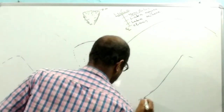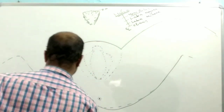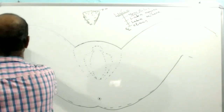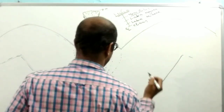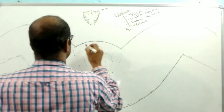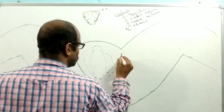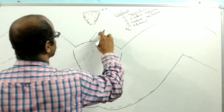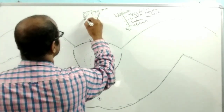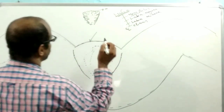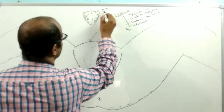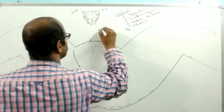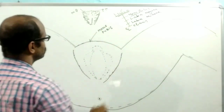Let me draw the total external genitalia of the female. This is the elevated pad-like structure. This is the mons pubis.